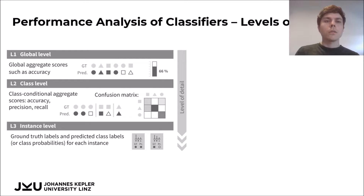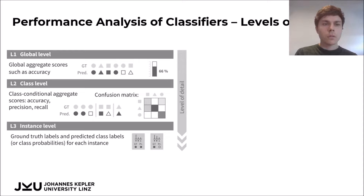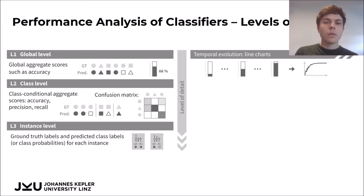We also realized that the performance analysis of classifiers can be carried out on three different levels of detail. On the global level, aggregate scores such as accuracy measure how well a model performs in terms of a single number. On the class level, there are aggregate scores such as precision and recall and other constructs like the confusion matrix. Finally, if you want to analyze how your model performs on an instance level, you have to look at individual ground truth labels and predictions. Adapting to the temporal aspects is easy for the global level — you can simply plot the single number scores as line charts, which is exactly what is done in many performance analysis tools.